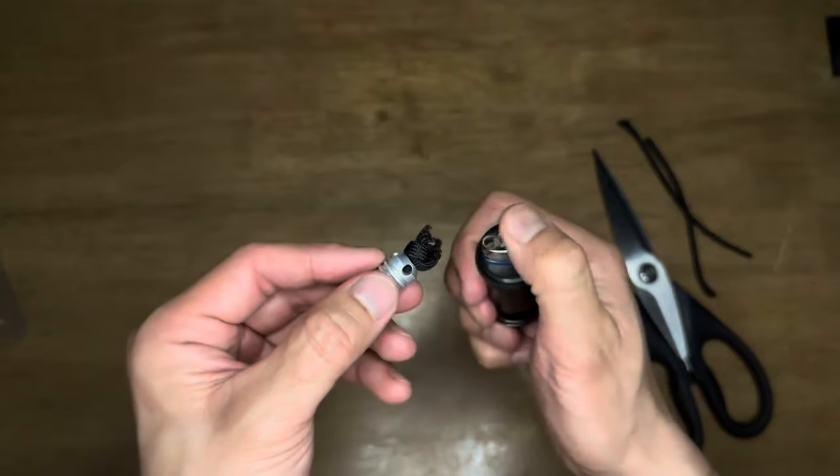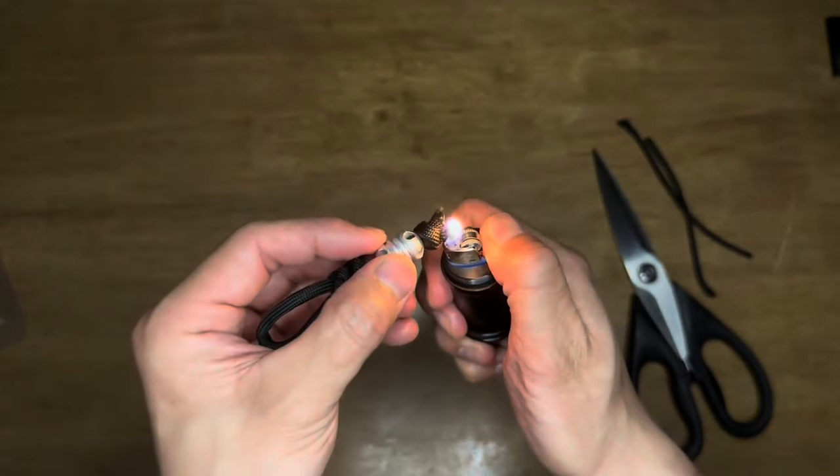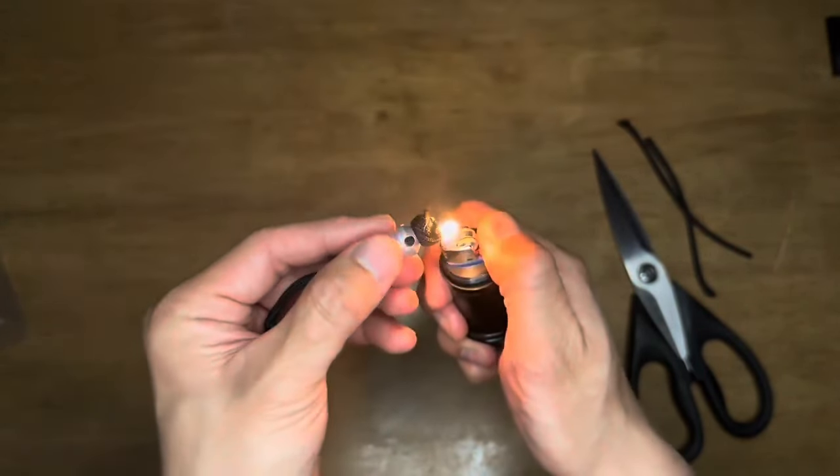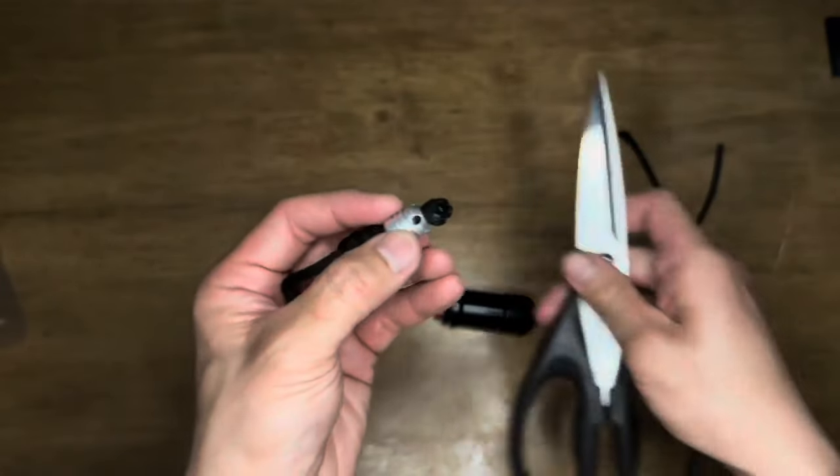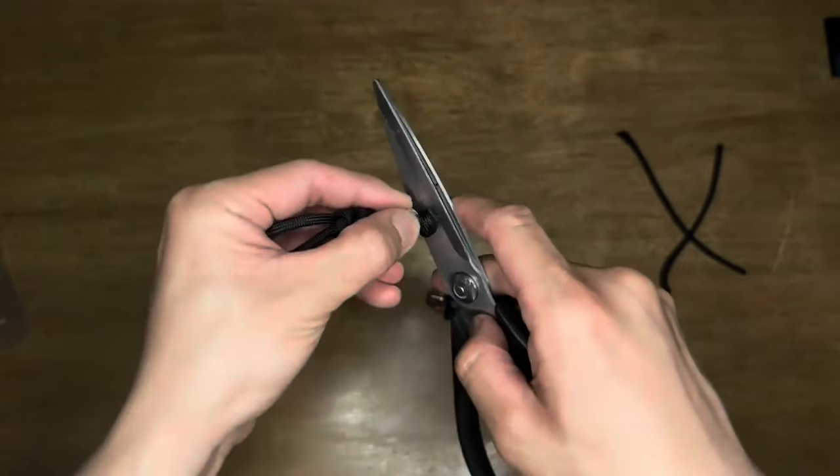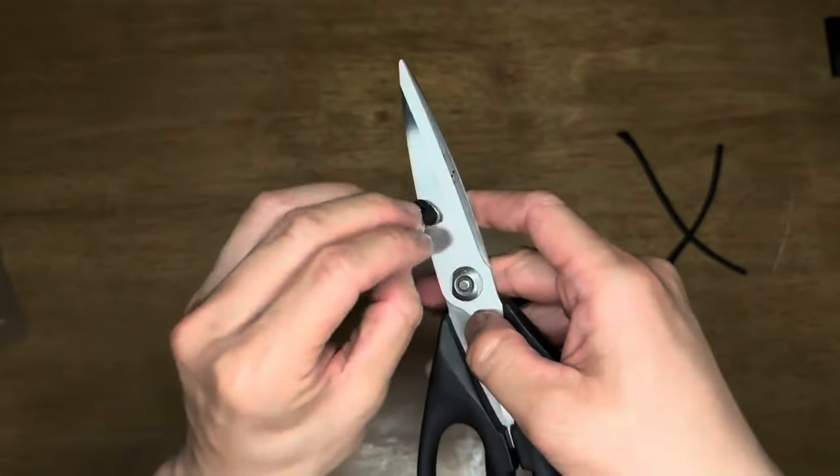Take your lighter and burn the ends. Hold the flame up to the rope until you start to see the ends melting. Then take your scissor and press the knot up against the metal. Be careful not to burn yourself.